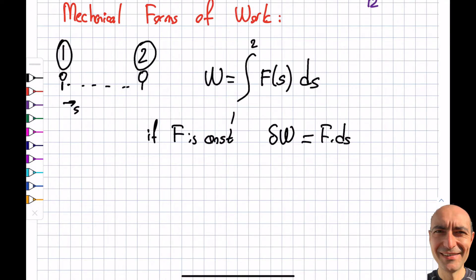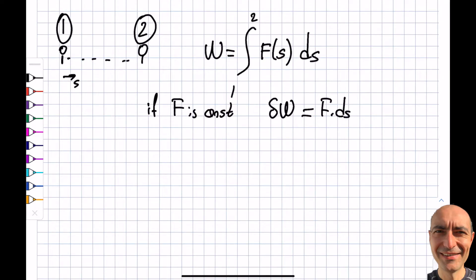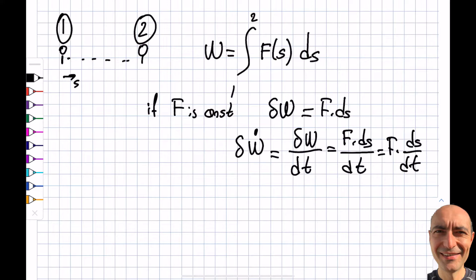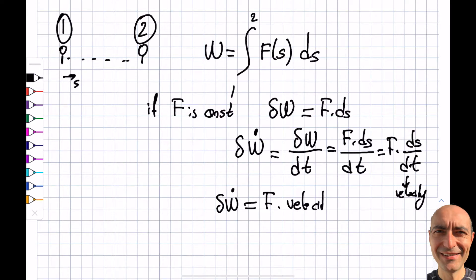Force times distance is the torque — what we used before in solid mechanics courses. If I'm interested in power, this is going to be the inexact differential of work divided by time. If I want to move an object a distance ds in time dt, then power is F times ds/dt. What is ds/dt? The distance traveled divided by the time it takes is called velocity. So power equals force times velocity.